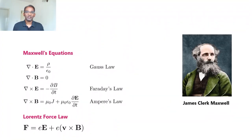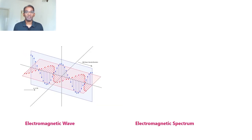The existence of electromagnetic waves was predicted by the four equations by Maxwell. These four equations form a set of coupled partial differential equations which, together with the Lorentz force law, form the basis of classical electromagnetism, classical optics, and electrical circuit theory. They describe how electric and magnetic fields are created by charges, currents, and varying electric and magnetic fields.